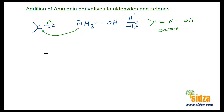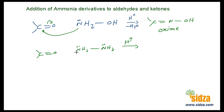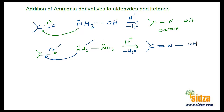Another reagent is hydrazine, NH2-NH2. Here the same procedure applies: one NH2 end attacks the carbonyl carbon, the addition product forms, water is lost, and you get a C=N double bond with an -NH2 group attached. This product — C=N-NH2 — is called a hydrazone. So from hydrazine you get a hydrazone.